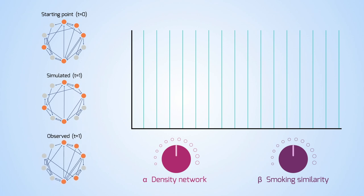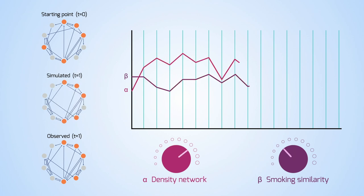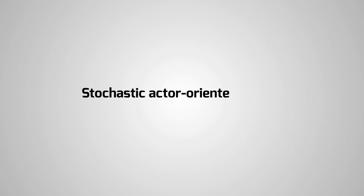If connections and smokers in the final network are too few, the parameters are increased. The algorithm converges stochastically to the optimum value of parameters. This stochastic actor-oriented model can include many complex sociological factors and influences.